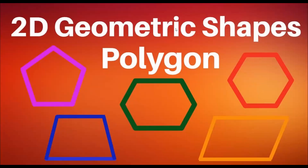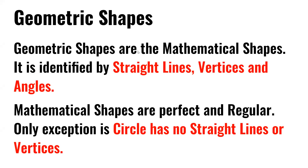Welcome to Learning User. Today we're going to learn about 2D geometric shapes. Geometric shapes are the mathematical shapes. They are identified by straight lines, vertices, and angles. Mathematical shapes are perfect and regular. The only exception is the circle because it has no straight lines or vertices.